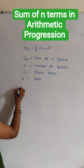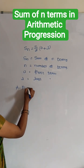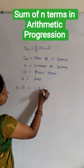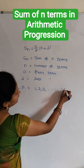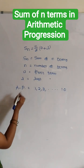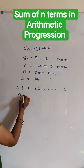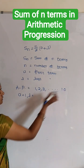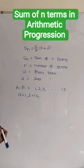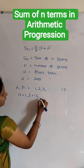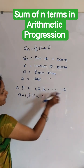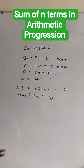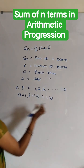Let us take an arithmetic progression 1, 2, 3 and so on till n. Here, a is equals to 1 the first term, last term l is equals to 10, and n is equals to 10 because there are 10 numbers in this arithmetic progression series.